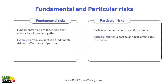Fundamental and particular risk. Fundamental risks are those that can affect a lot of people together — an earthquake affects many people, a terrorism attack affects many people, a train accident impacts many people. That is a fundamental risk. Particular risk: when a fire occurs in a particular shop, only that shop's owner is affected. That is a particular risk.